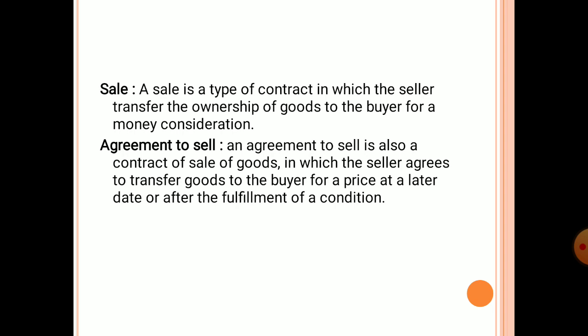An agreement to sell is also a contract of sale of goods in which the seller agrees to transfer goods to the buyer for a price at a later date or upon fulfillment of a condition. When there is willingness of both parties to constitute a sale — the buyer agrees to buy and the seller is ready to sell the goods for a monetary value.